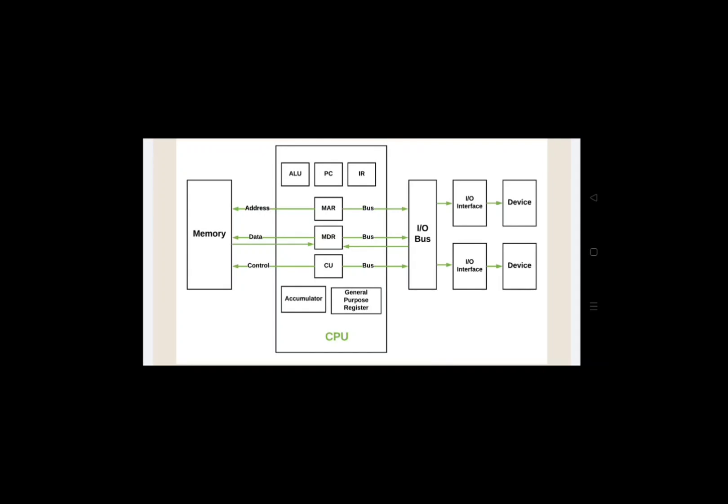Next is the bus design architecture diagram. A bus is a communication pathway connecting two or more devices. Each bus contains a number of separate lines, and each group of lines is designed with specific functions like data, address, and control. The Program Counter (PC) contains the address of the next instruction to be fetched from memory.